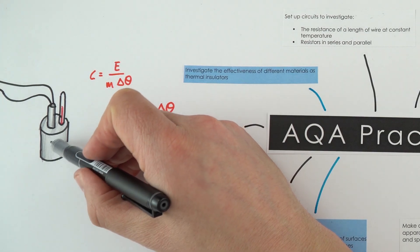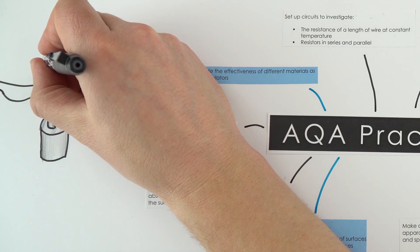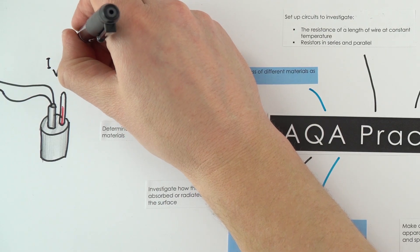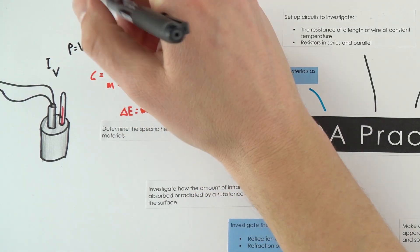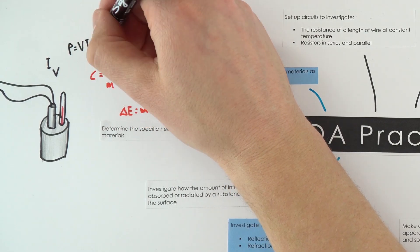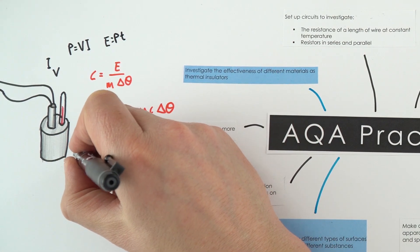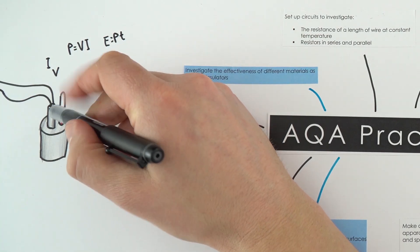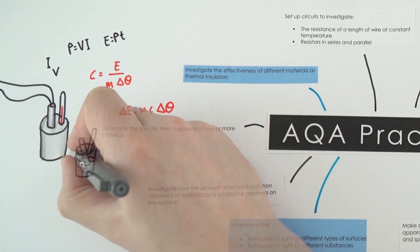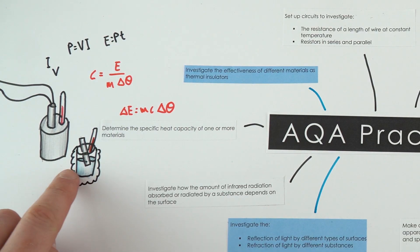For a solid, you'd use a block with an electric heater, measuring the current and potential difference. The power transferred equals potential difference times current, and the total energy equals power times time. For a liquid, you'd have a beaker with a metal heater inside, a thermometer, and insulation with a lid on top to reduce heat losses, then simply heat the substance up.